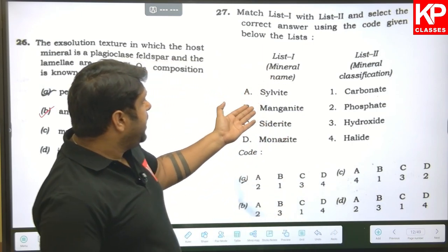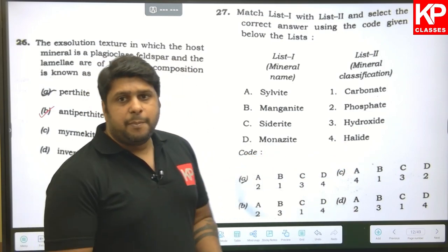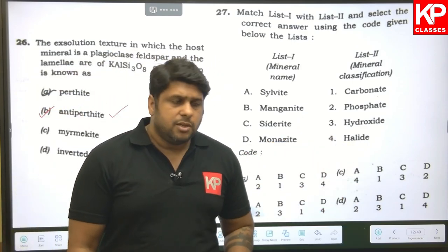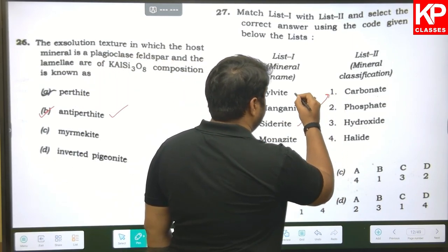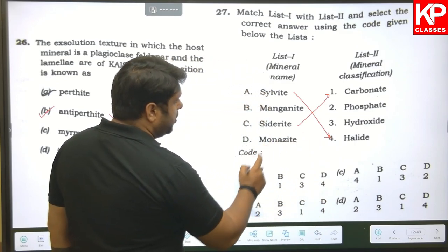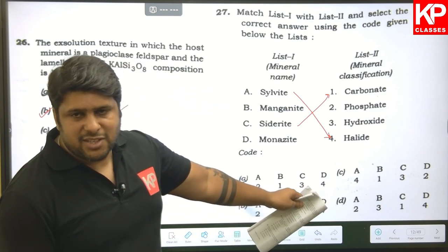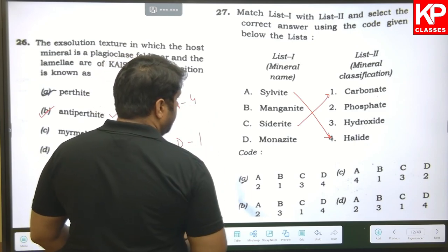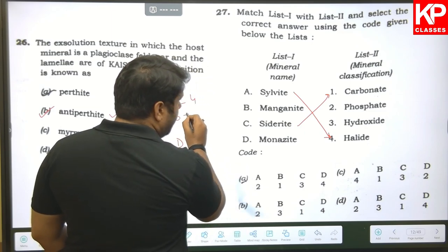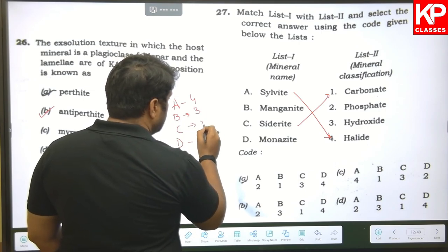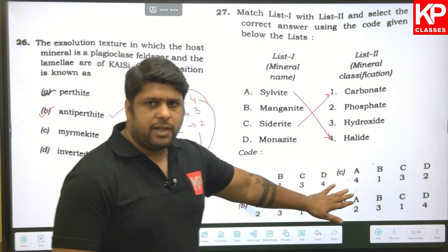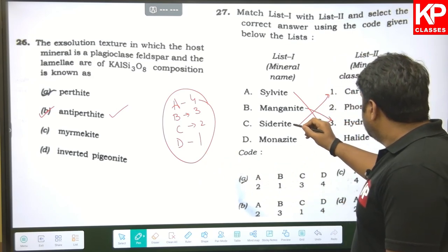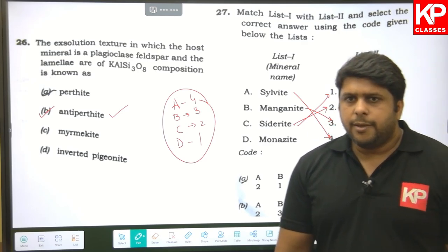Question twenty-seven: match mineral names with mineral classification. From previous questions this year, siderite is a carbonate and sylvite is a halide. Manganite is a hydroxide. While making the slide a copy-paste error occurred, but matching correctly: K goes with four, D goes with one, manganite (hydroxide) is B with three, and C goes with two. Note that siderite is a carbonate, not a phosphate — that was a slide error.